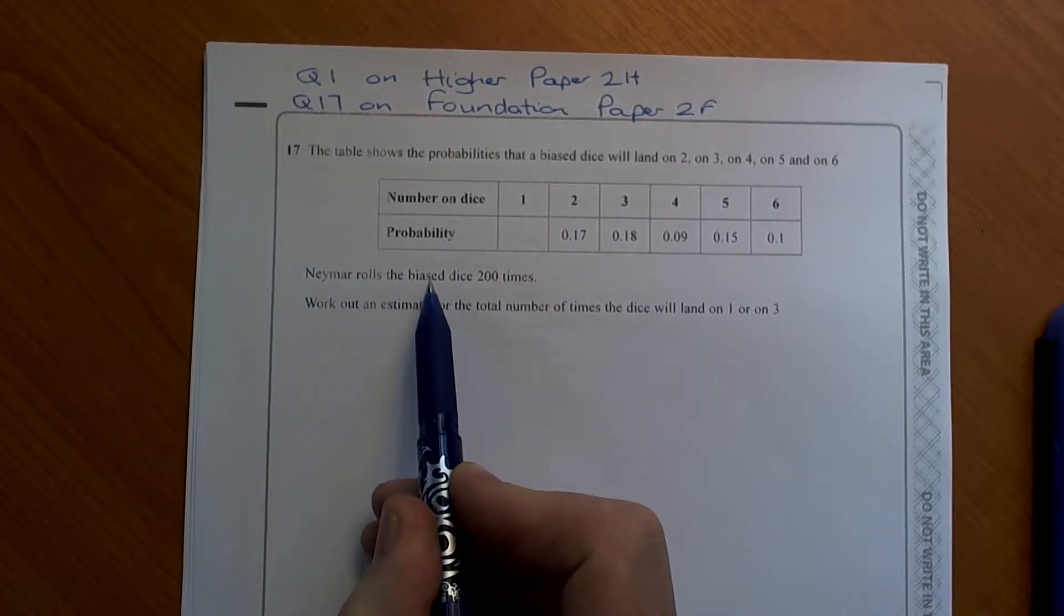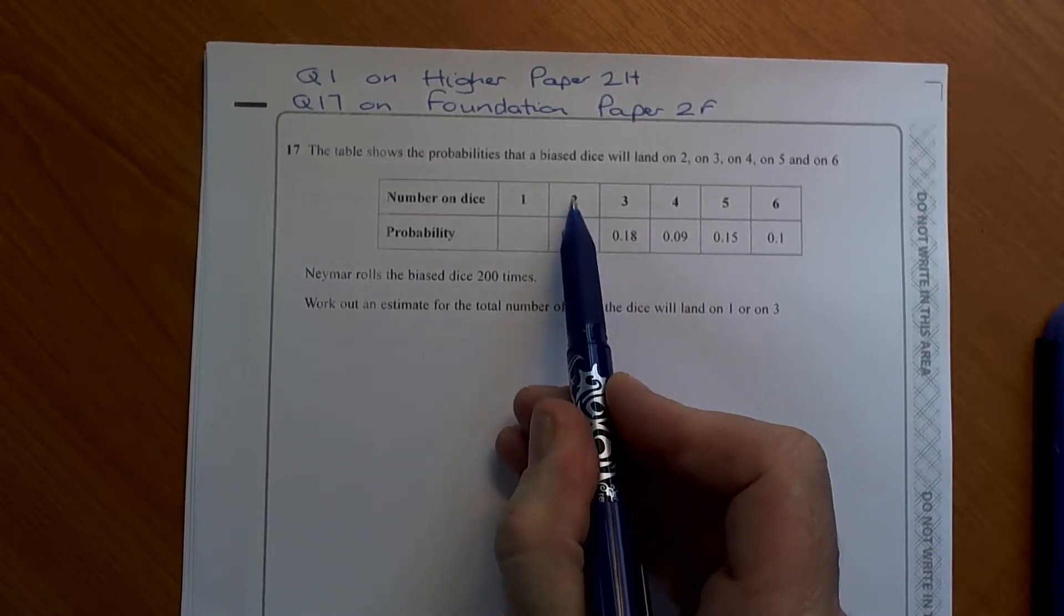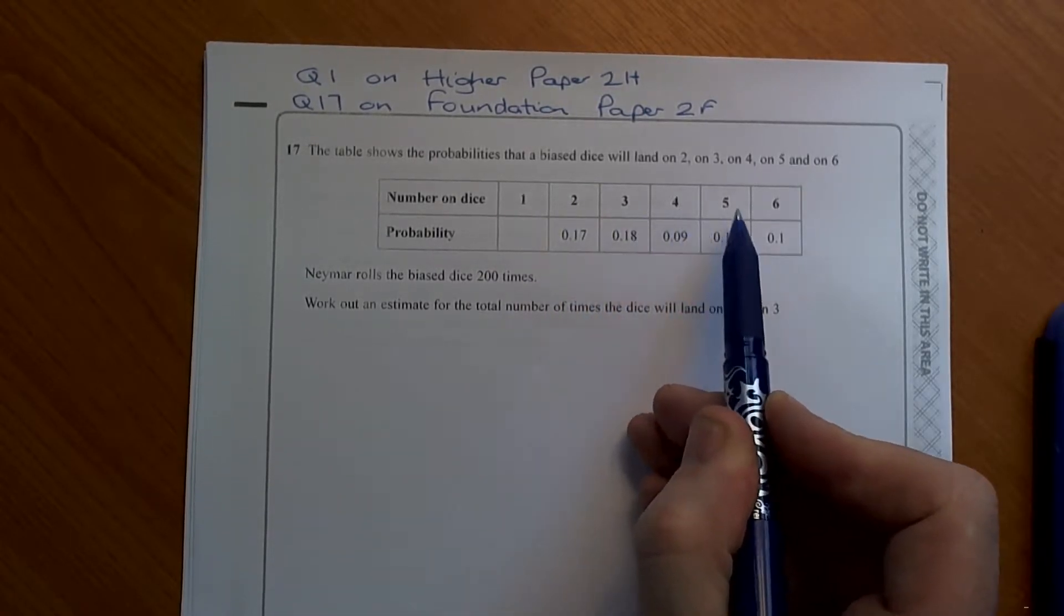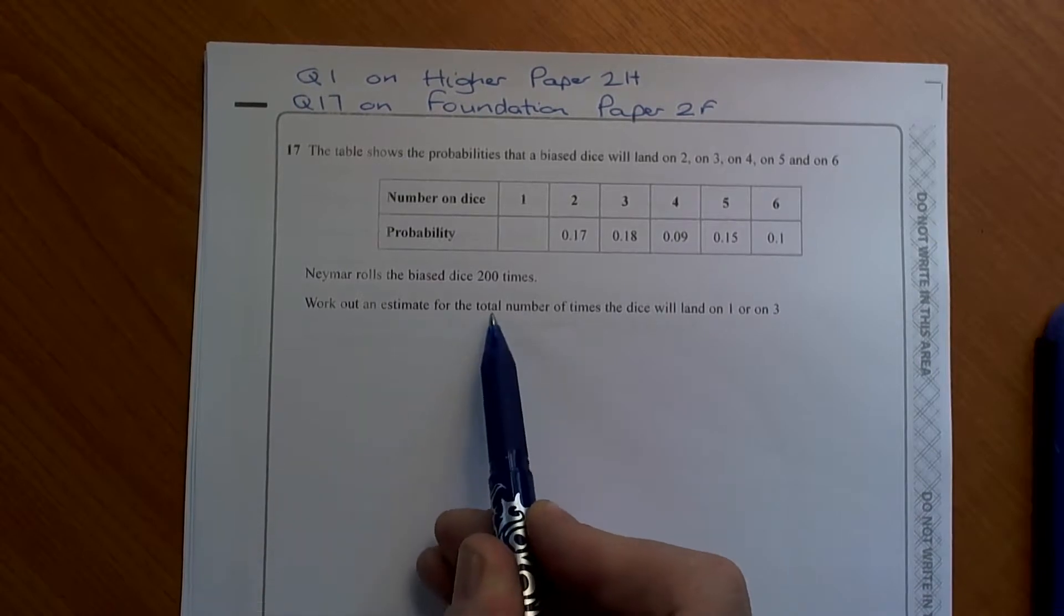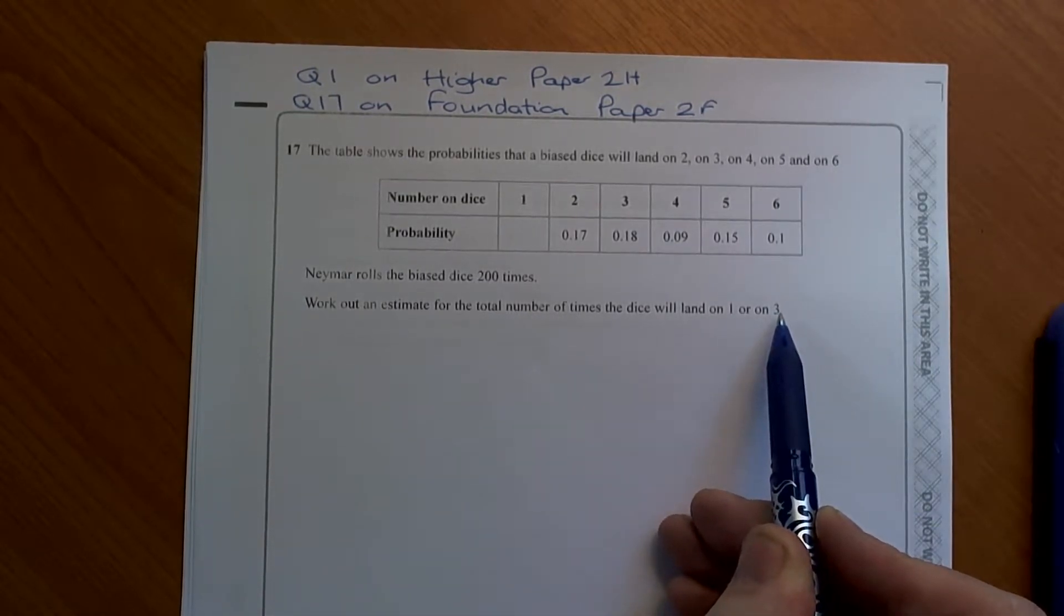It says that Neymar rolls the biased dice 200 times and these are the probabilities of landing on a 2, 3, 4, 5 or 6. Work out an estimate for the total number of times the dice will land on a 1 or a 3.